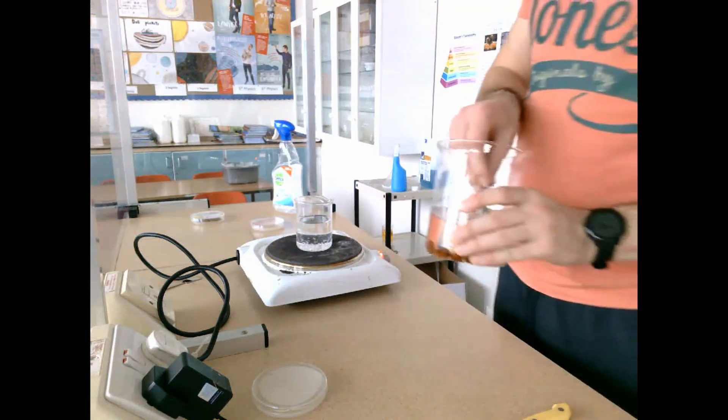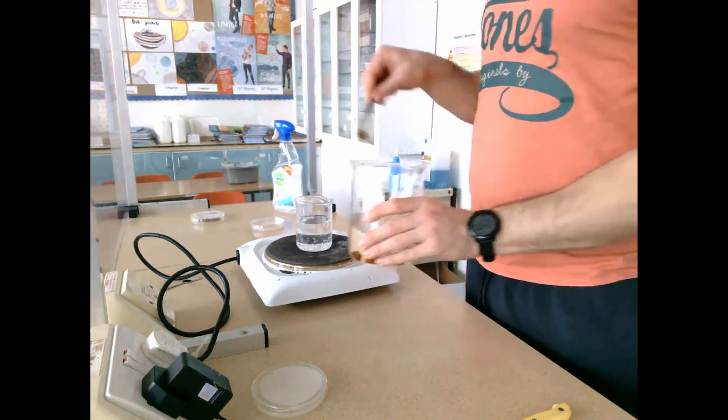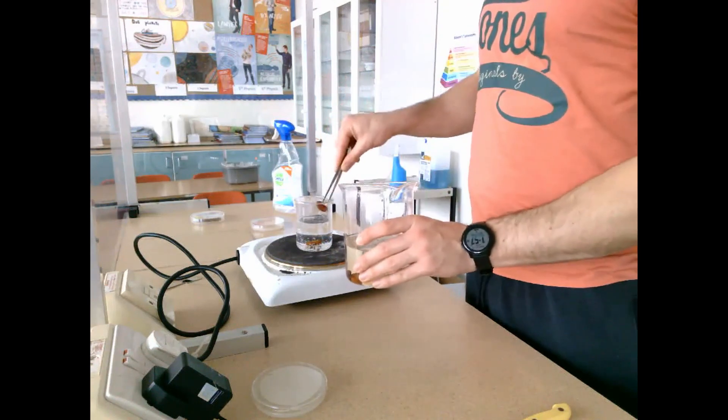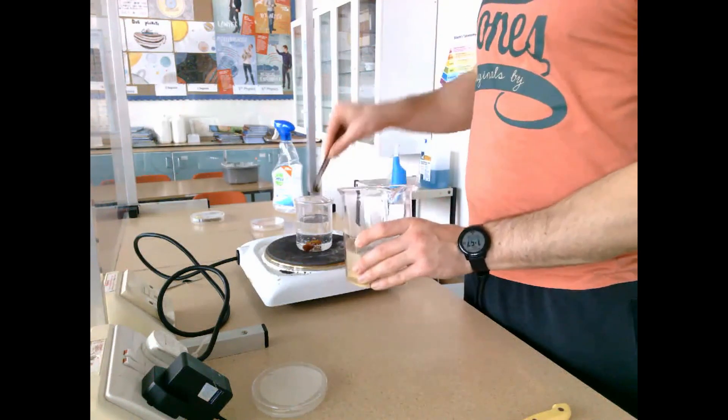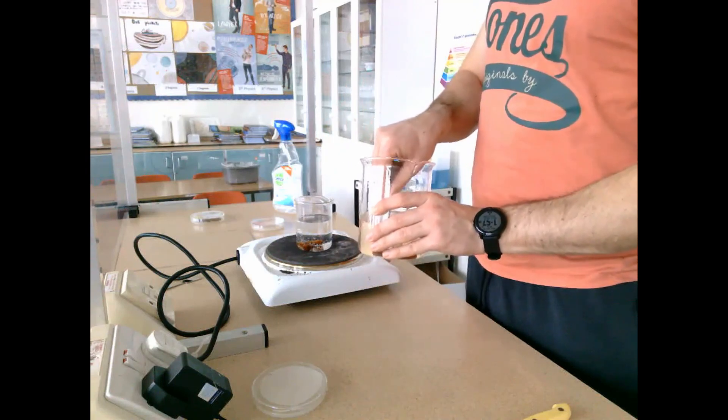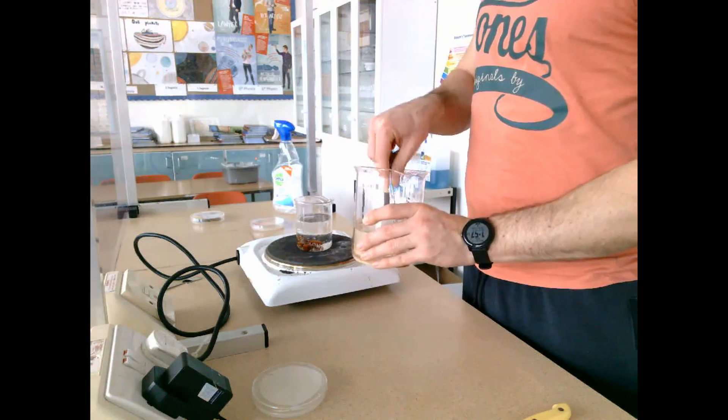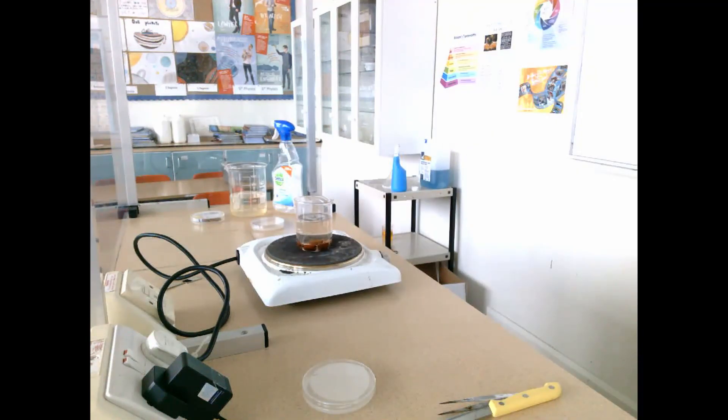I disinfect the area again because I'm using a different set of seeds. The forceps and knife are disinfected, then I place the seeds into water on heat. I'm going to boil the seeds for 15 minutes to denature any enzymes present and kill those seeds.